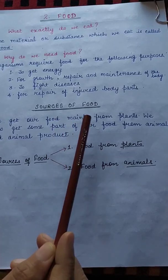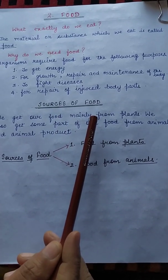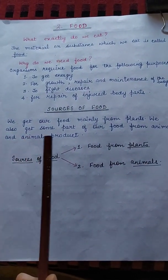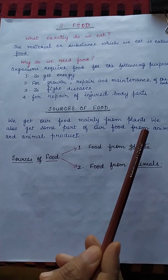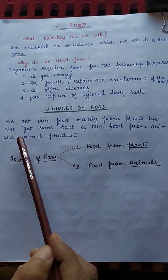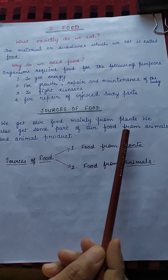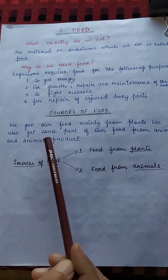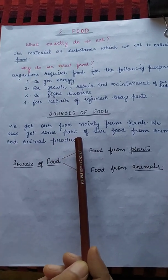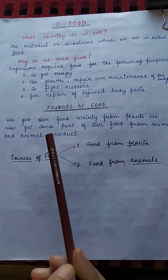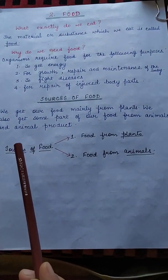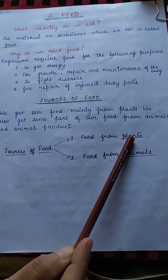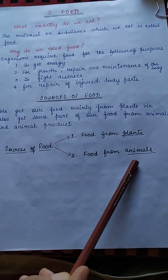Sources of food. We get food mainly from plants. We also get some part of our food from animals and animal products. So food is obtained by living things from both plants and animals.